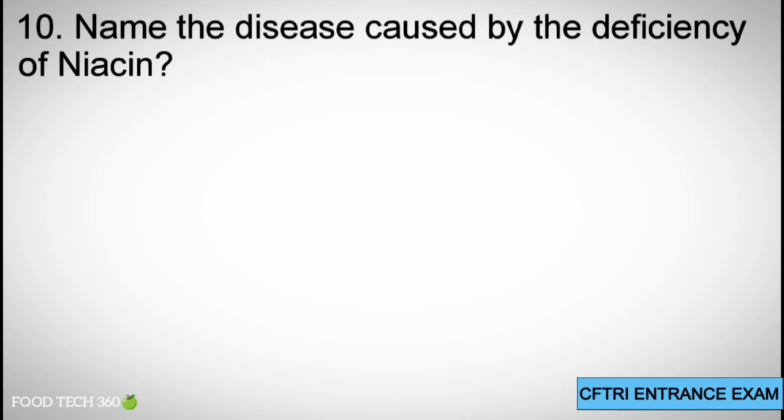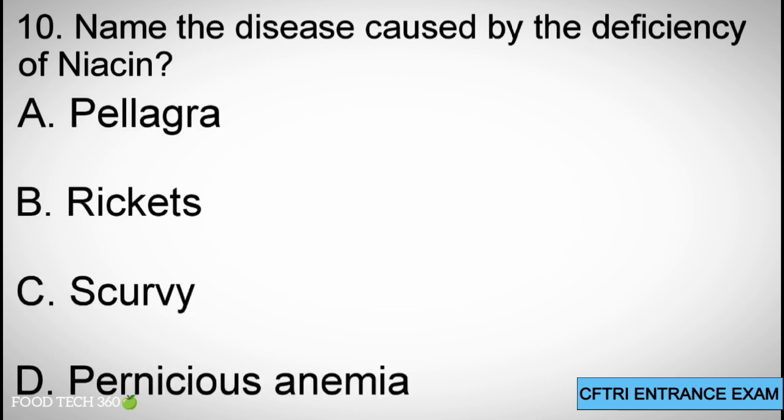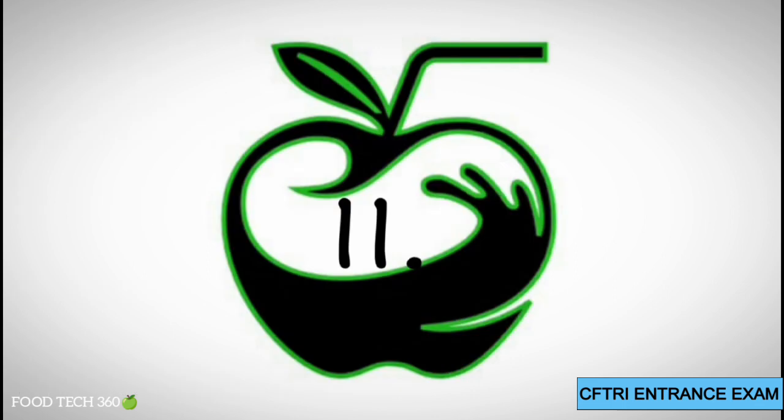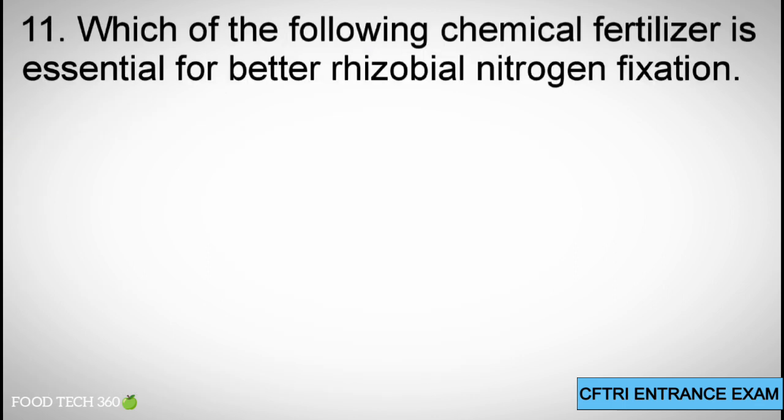Question 10: Name the disease caused by the deficiency of niacin. A. Pellagra, B. Rickets, C. Scurvy, D. Pernicious anemia. Correct answer: A. Pellagra.